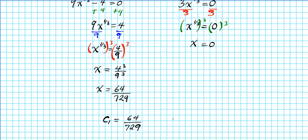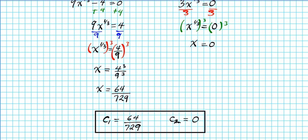Critical values are your potential extrema. All extrema are critical values, but not all critical values are extrema. To determine if these are actual extrema, you need to examine the graph, use the first derivative test, or use the second derivative test on these critical values to confirm whether they are a maximum or minimum.